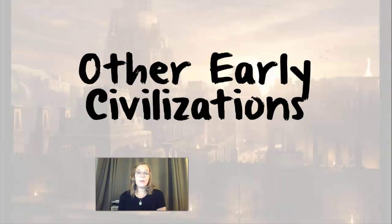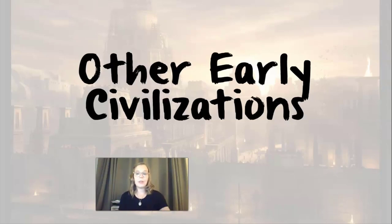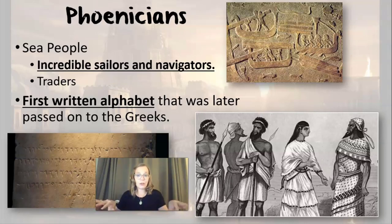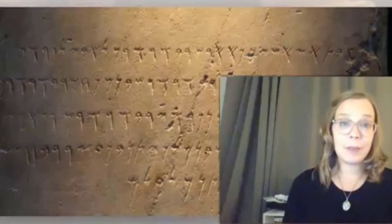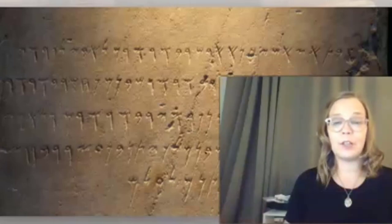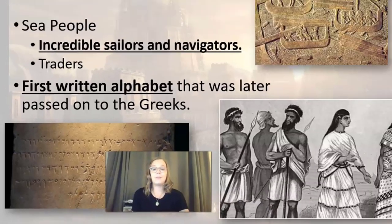Now let's talk about some other early civilizations. Even though these aren't part of the four early river valley civilizations, they're all very important. One we mentioned previously was the Phoenicians, also known as the sea people, because they were really good at sailing and navigation — some of the first to really venture out onto the ocean. They were also traders. The big thing that makes them very important is that they have one of the first written alphabets, which was passed on to the Greeks and eventually became our English alphabet.